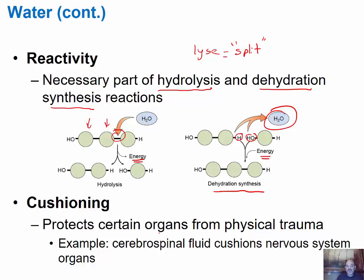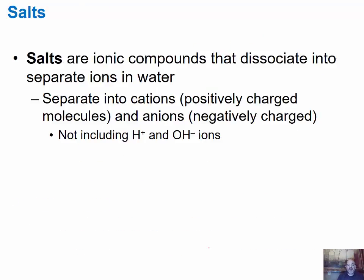Water can also serve as a cushioning agent, protecting organs from physical trauma. For example, surrounding your brain and spinal cord is cerebrospinal fluid, which cushions the organs of your nervous system. Salts are ionic compounds that dissociate and separate into ions in water — they separate into cations, which are positively charged ions, and anions, which are negatively charged. This does not include hydrogen and hydroxide ions, which will be discussed separately.